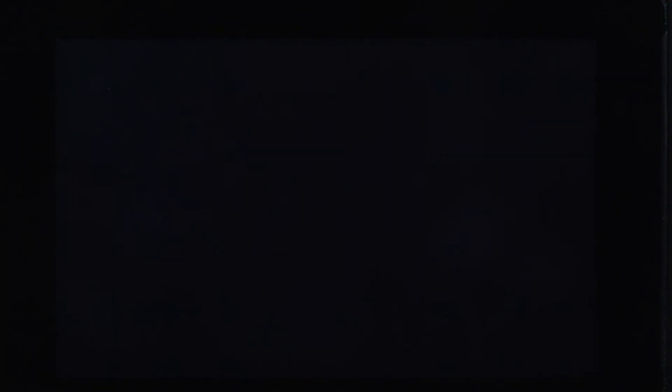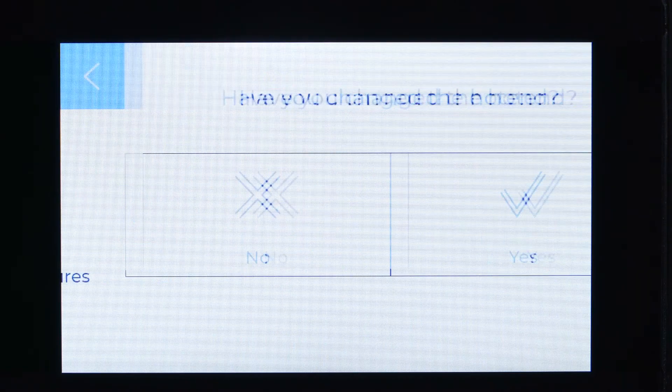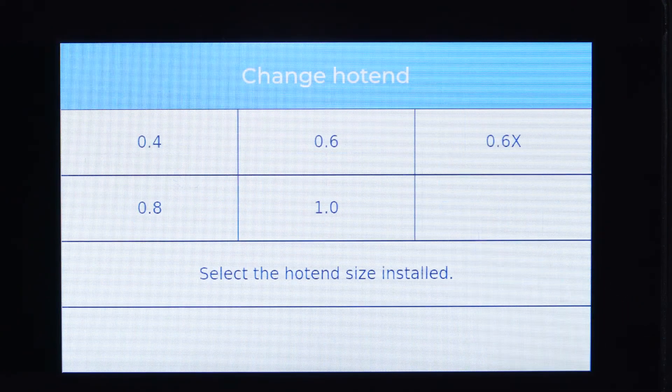Turn the printer on and confirm that you have changed the hotend. Select the newly installed hotend on the screen and press continue.